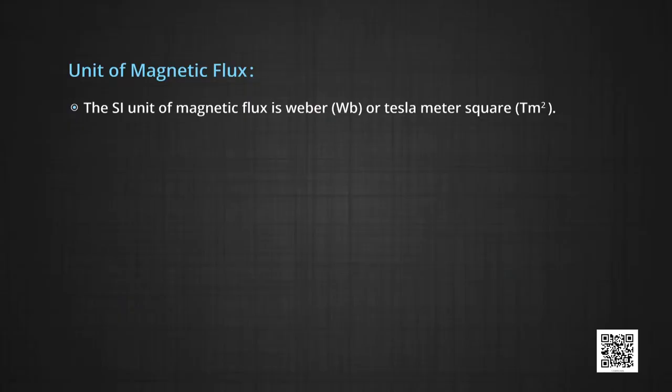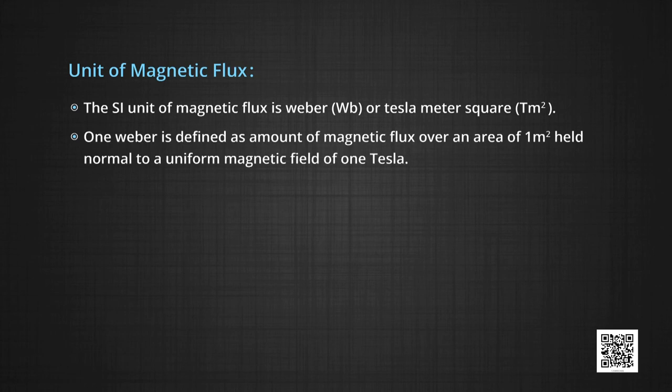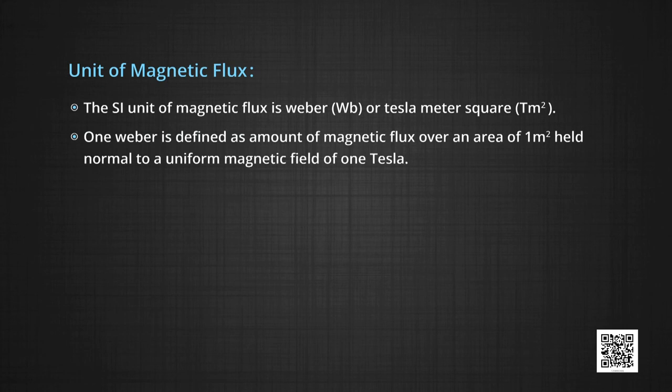The SI unit of magnetic flux is Weber or Tesla·meter². 1 Weber is defined as the amount of magnetic flux over an area of 1 m² held normal to a uniform magnetic field of 1 Tesla. The CGS unit of magnetic flux is Maxwell, where 1 Weber = 10⁸ Maxwell.